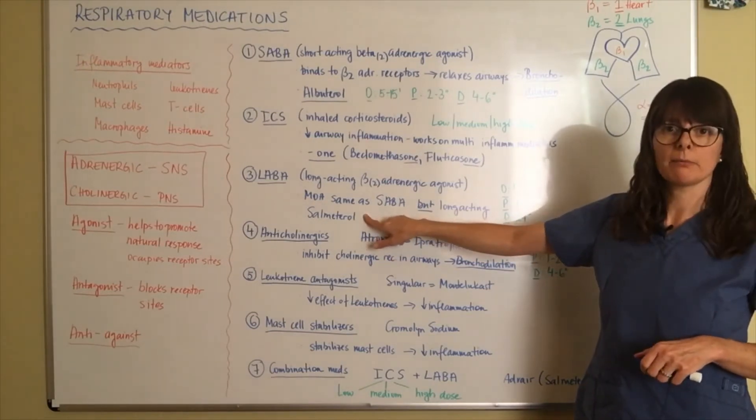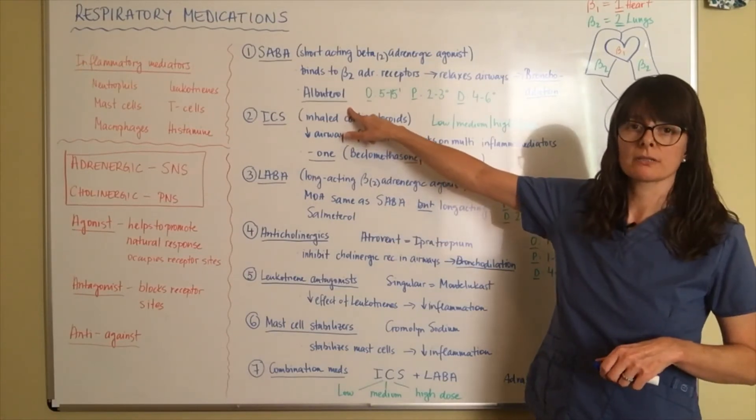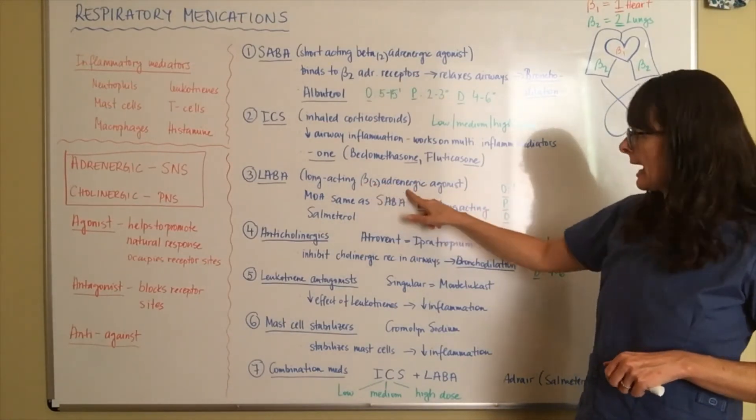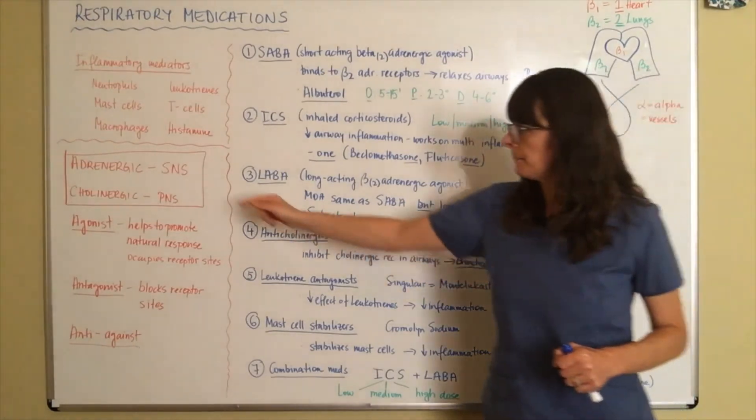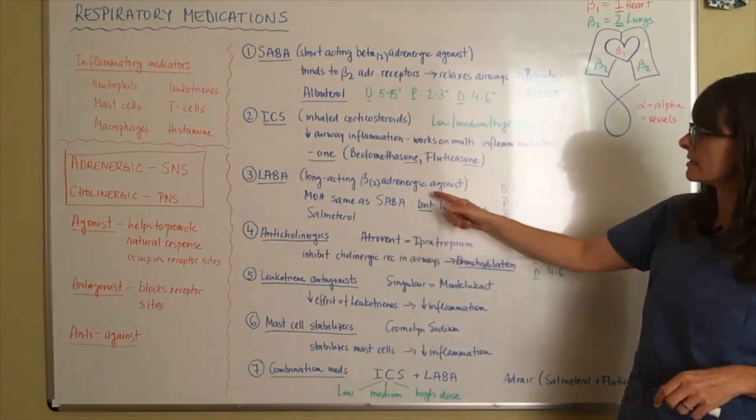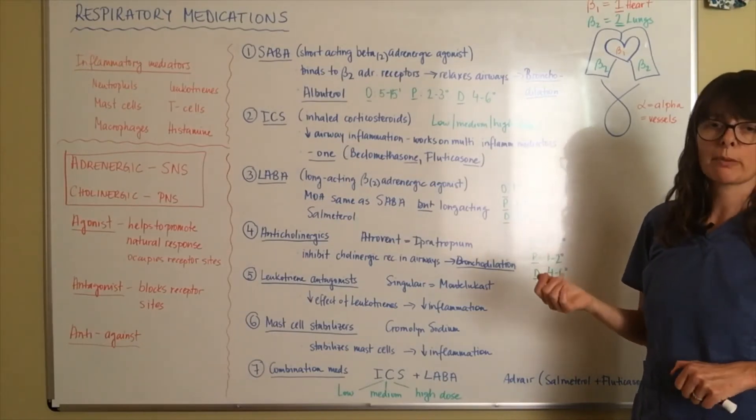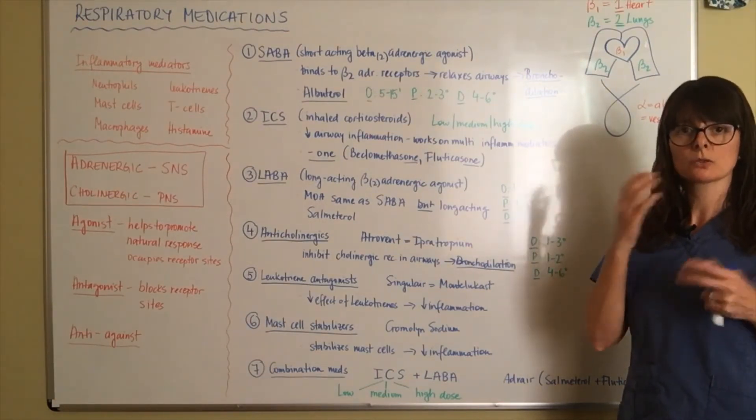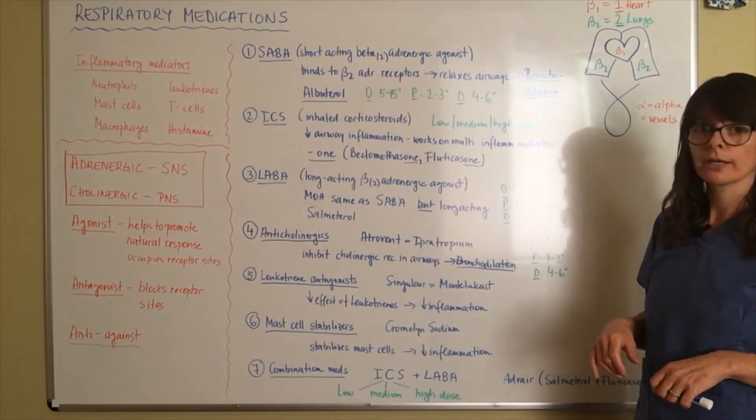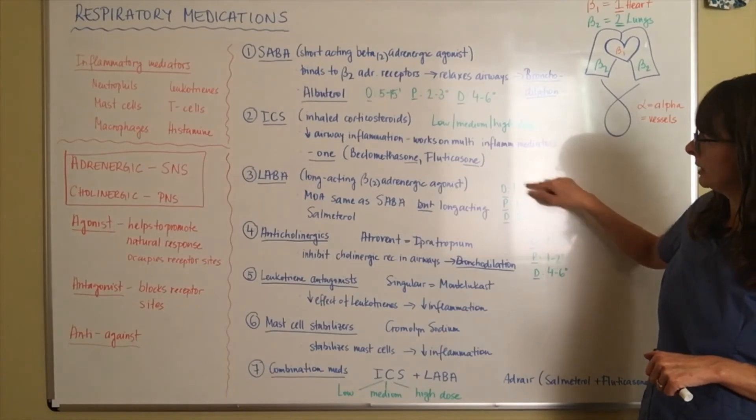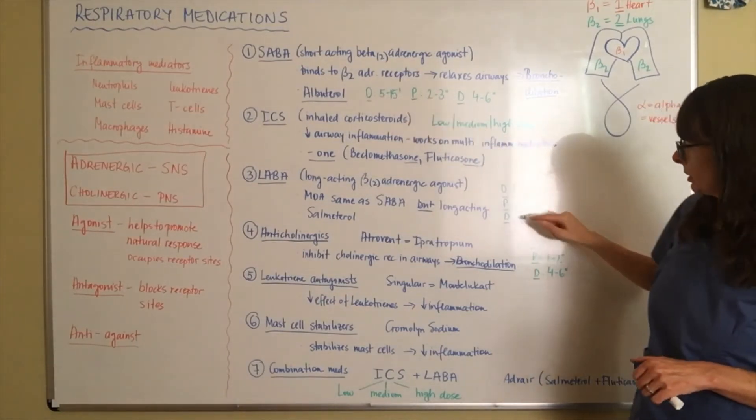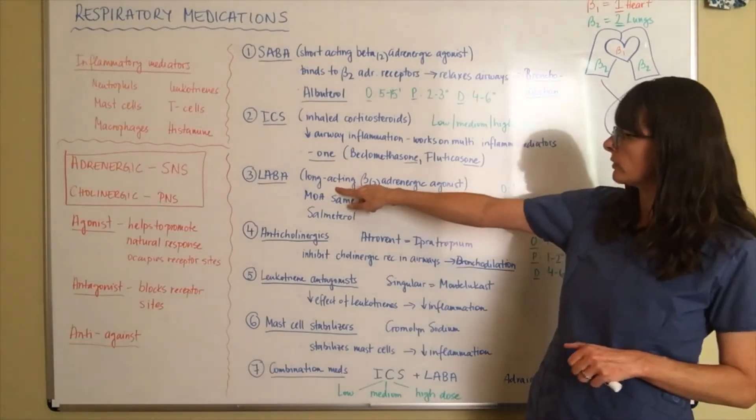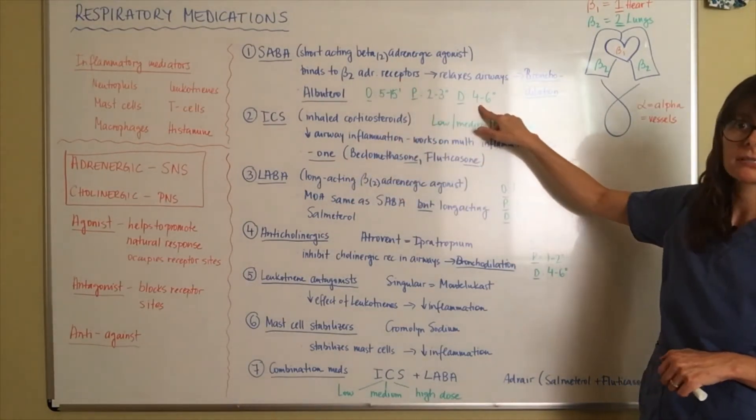So the mechanism of action is the same as the SABA, but it's longer acting. The example here would be salmeterol, again, ending in -ol, which is pretty typical for these adrenergic agonists. Now we already know that beta-2 applies to lungs. Adrenergic flight or flight adrenaline pertains to the sympathetic nervous system. So it does exactly the same as the albuterol, where it binds to those beta-2 adrenergic receptor sites, relaxing the bronchial smooth muscle and allowing for bronchodilation. So the patient can breathe easier. Now looking at onset, peak and duration over here. So onset is 1 hour. You can see it's longer than up here. The peak is 1 to 5 hours and the duration up to 24 hours. So it's long acting, right? Long acting 24 hours compared to short acting 4 to 6 hours for duration up here.